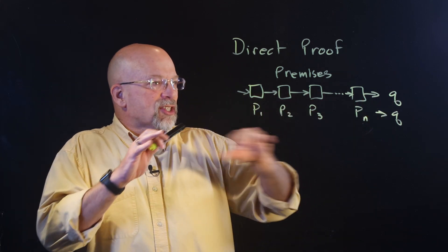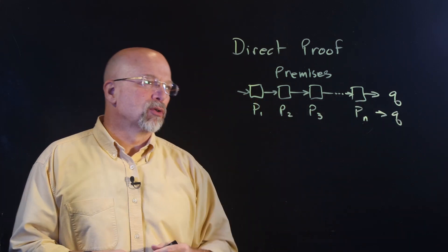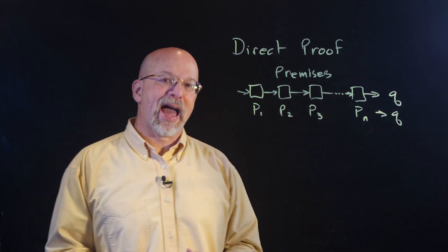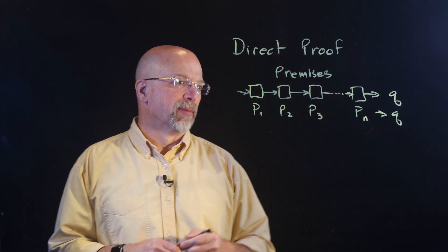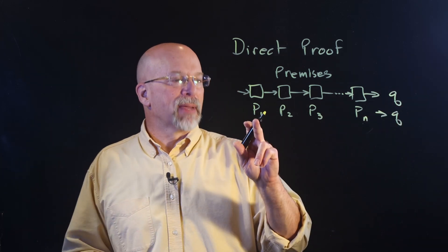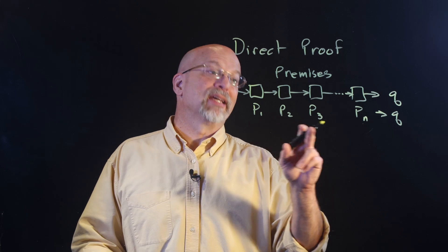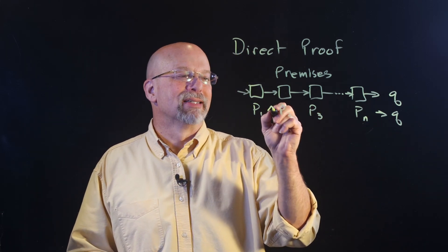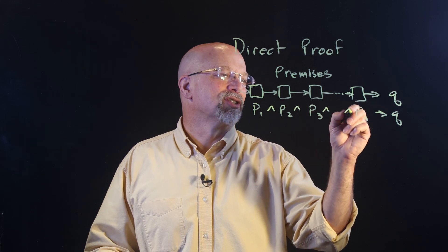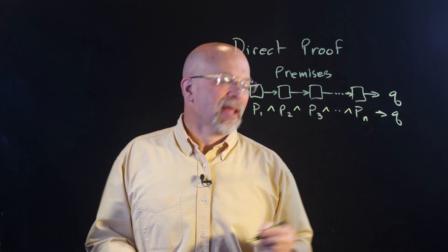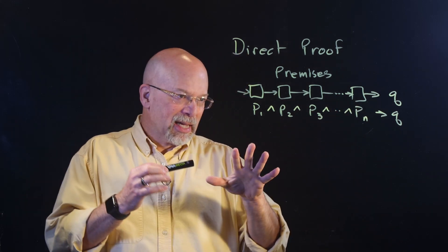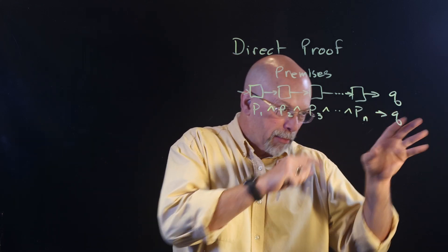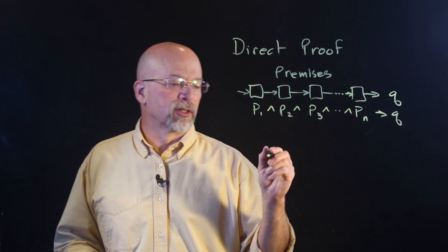If you look at this, it's like a chain. If you break any one of those links in the chain, then we've broken the path to our conclusion. That means P1 and P2 and P3 and all the way down to PN have to be true — sounds a lot like our AND operation. So we've got this idea of premise built upon premise built upon premise in order to get our conclusion.